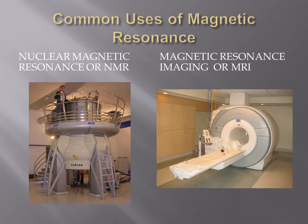Now that we understand the process of magnetic resonance, let's explore some of its more practical applications. NMR, or nuclear magnetic resonance, uses magnetic resonance to model 3D protein structures. The process involves a very powerful magnet and uses various isotopes with nuclear spin. A protein is translated with spin molecules, also known as isotopes, and a 3D image is compiled through the photon markings.